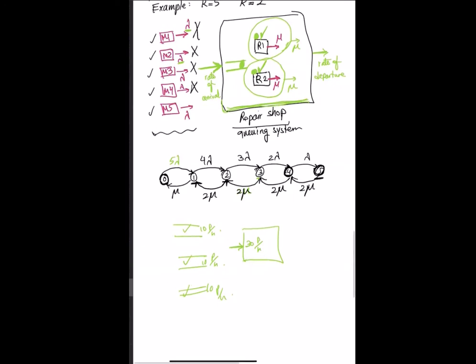As you can see, the arrival rates are 5 lambda, 4 lambda, 3 lambda, 2 lambda, and lambda — the rate of arrival is not fixed. For every other system we looked at, the arrival rate was always lambda regardless of how many people were in the system. But here the rate of arrival depends on the state of the system, and that's what we mean by finite source models.